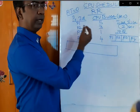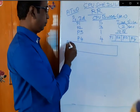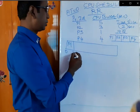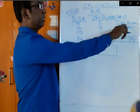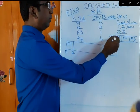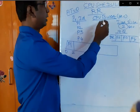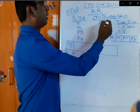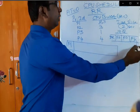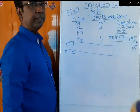If P1 enters into the CPU at time 0, P1 will execute for 2 seconds only, because the time slice is only 2 seconds. So P1 enters into the CPU, executes for 2 seconds, and the remaining time is 3 seconds. It will be placed at the end of the queue.